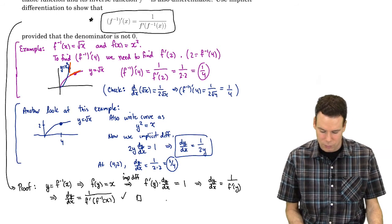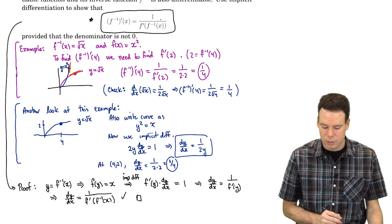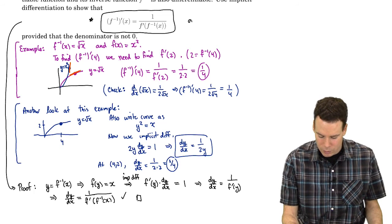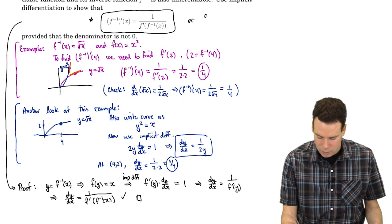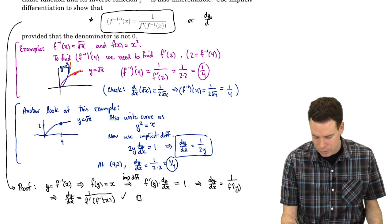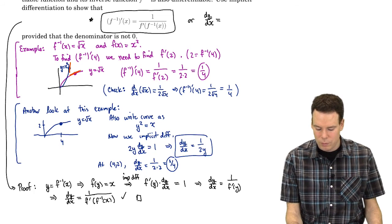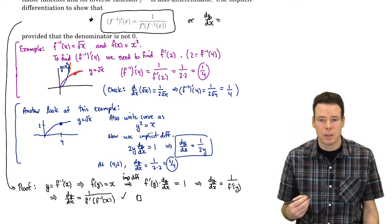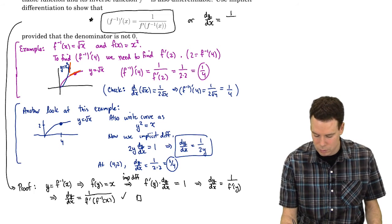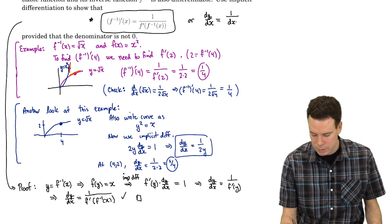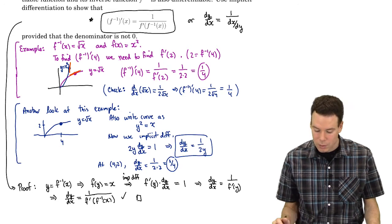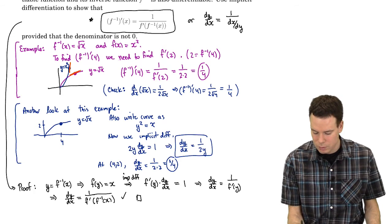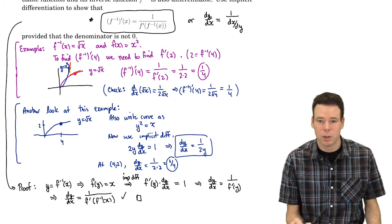We used implicit differentiation to verify this result. Notice it's written in Newton's notation. In Leibniz notation: dy/dx equals 1 over dx/dy. The derivative of the original function is 1 over the derivative of the inverse — a pretty nice way to write it.